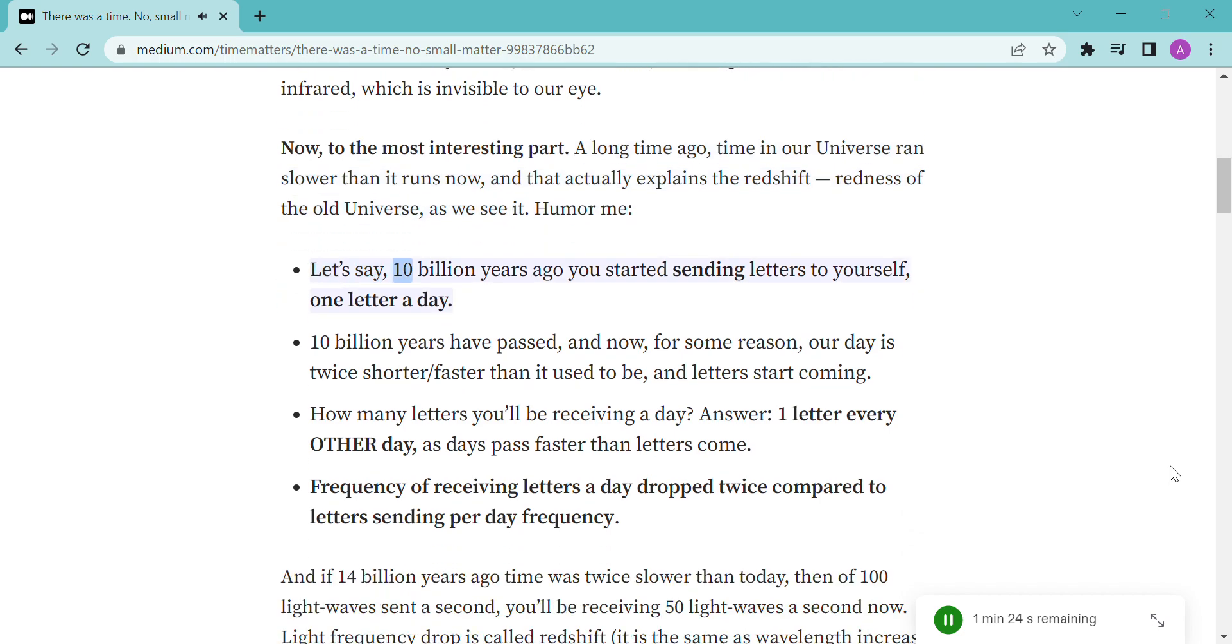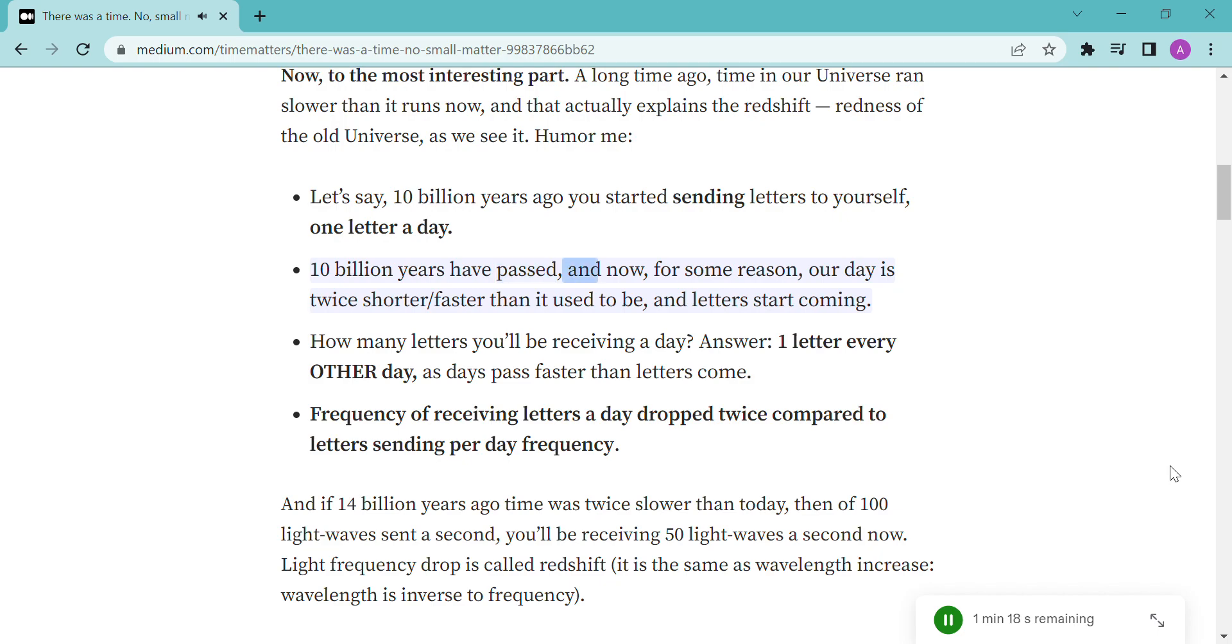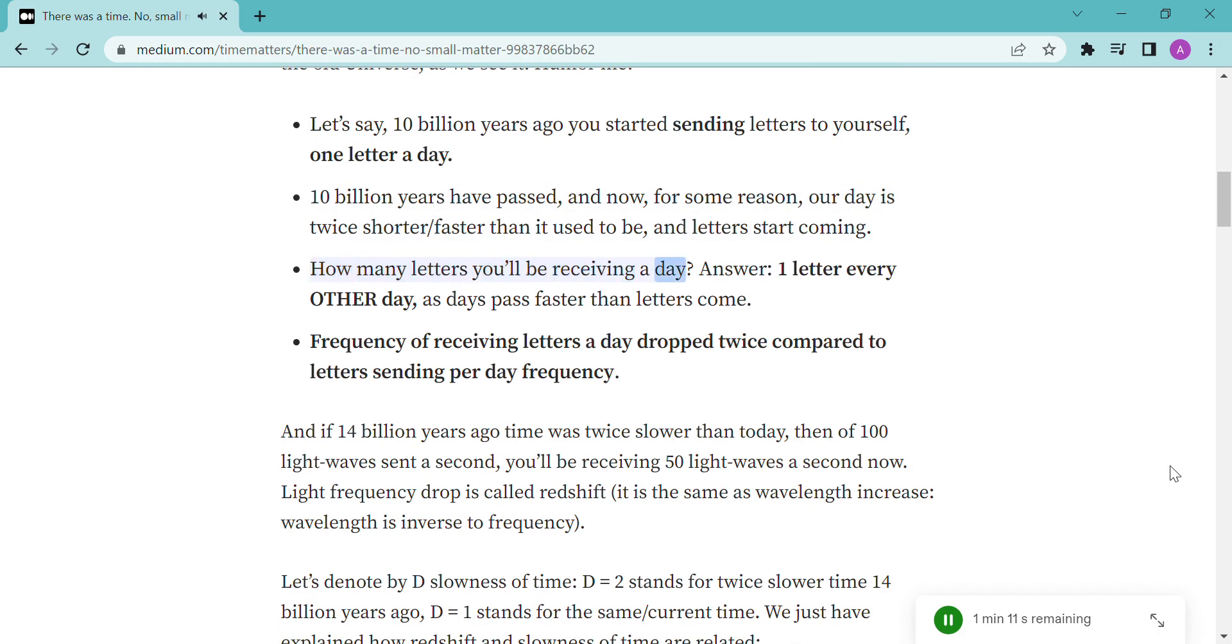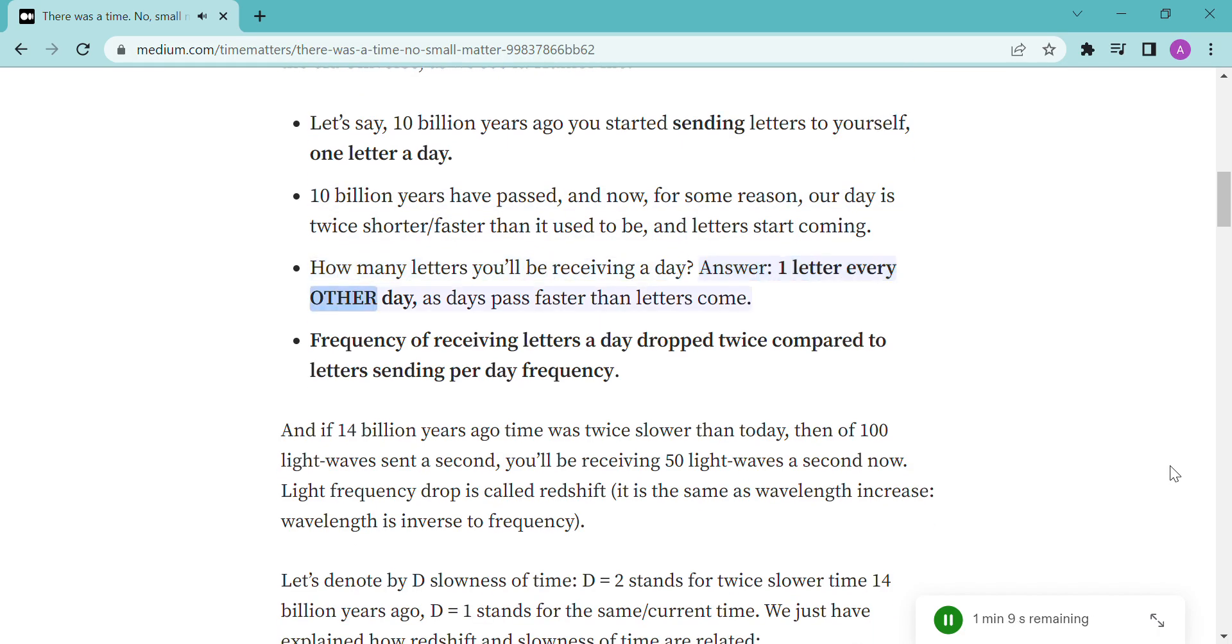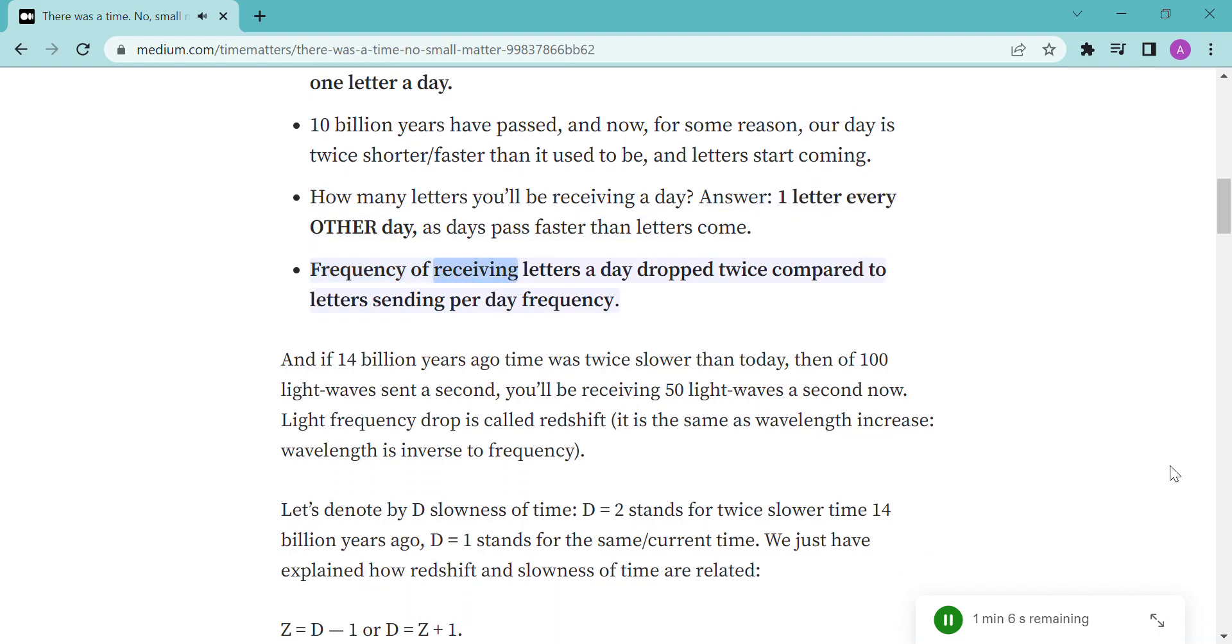Let's say 10 billion years ago you started sending letters to yourself, one letter a day. 10 billion years have passed, and now, for some reason, our day is twice shorter, faster than it used to be, and letters start coming. How many letters you'll be receiving a day? Answer: one letter every other day, as days pass faster than letters come. Frequency of receiving letters a day dropped twice compared to letters sending per day frequency.